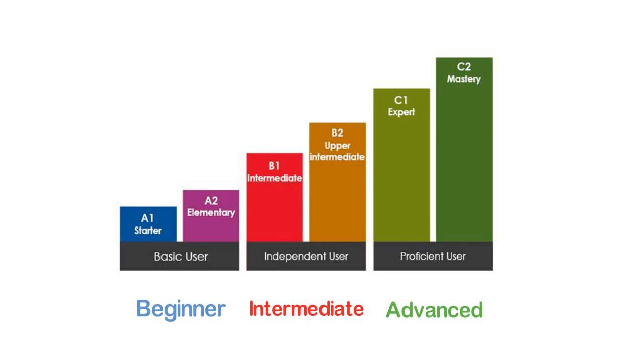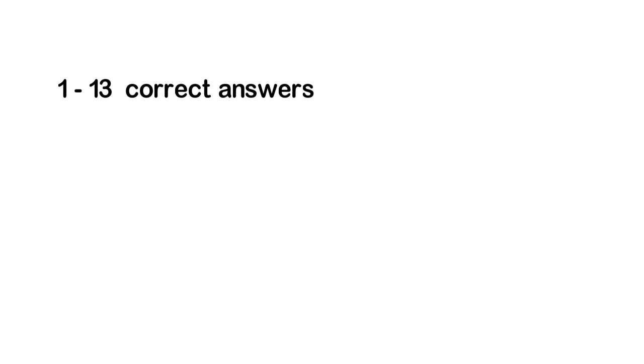With that in mind, if you got anything from 1 to 13 answers right, your level is probably between A1 and A2. Your level is most likely A2 if you got between 8 and 13 answers right.